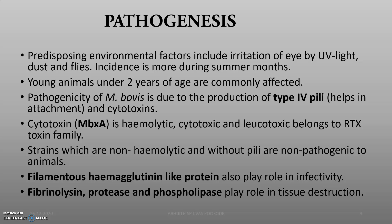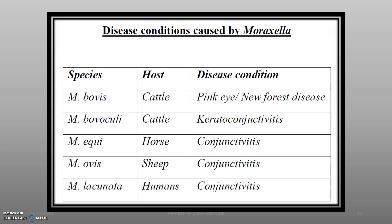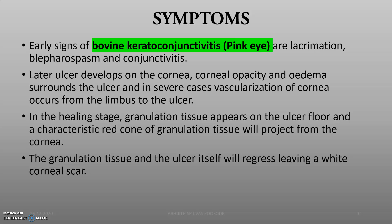Fibrinolysin, protease, and phospholipase play a role in tissue destruction. The disease condition produced by Moraxella — mainly Moraxella bovis — is pink eye, or infectious bovine keratoconjunctivitis in cattle. Sometimes Moraxella equi produces conjunctivitis in herds, and humans can get infection with Moraxella lacunata, also producing conjunctivitis. Symptoms in bovines include the eye turning pink due to lacrimation, blepharospasm, and conjunctivitis. Later, ulcers develop on the cornea with corneal opacity and edema surrounding the ulcer, sometimes leading to retinopathy. The granulation tissue and ulcer regress, leaving a white corneal scar.